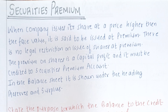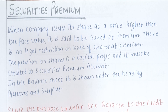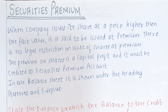A share may be issued at an amount more than the face value — this is called issue of shares at premium. For example, if a share has a face value of Rs. 10 and it is issued at Rs. 20, then the difference of Rs. 10 is the premium per share. There is no legal restriction on issuing shares at premium. The premium on shares is a capital profit, and hence it must be credited to the securities premium account and shown in the balance sheet under reserves and surplus.